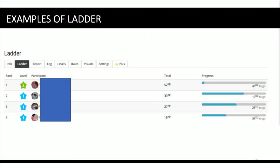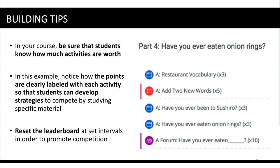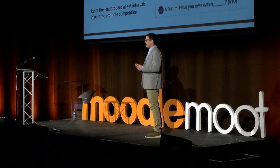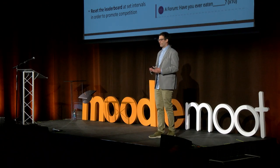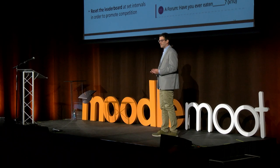The fruits of your labor is the leaderboard: student rank, level, their image, and progress to the next level. This can be made private or public so students can see each other. Building tips: make sure students know how much each activity is worth — in this example, points are shown at the end of each activity. This helps them develop strategies to use the course and engage in the friendly competition that is one of the key points of gamification.